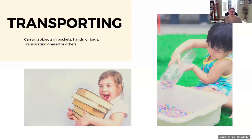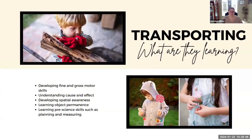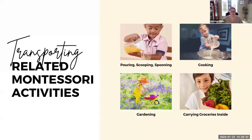The next schema is the transporting or transportation schema — this includes an interest in carrying objects in one's pockets, hands, or a bag, as well as moving or transporting oneself or others. In this schema, young children are developing their fine and gross motor skills and spatial awareness, starting to understand cause and effect, learning about object permanence — that things still exist even when you can't see them — and developing pre-science skills like planning and measuring.